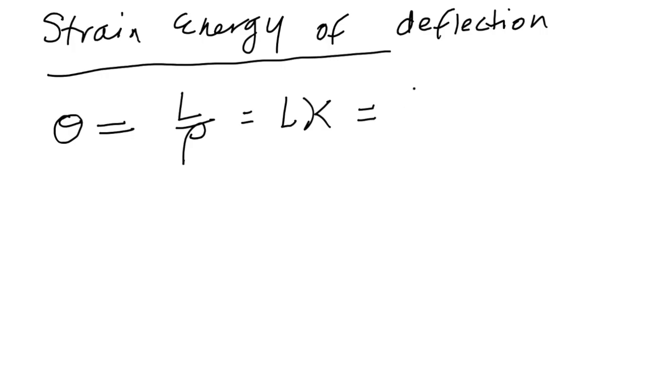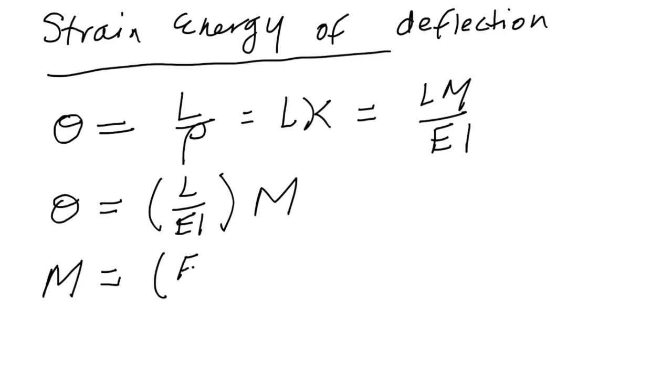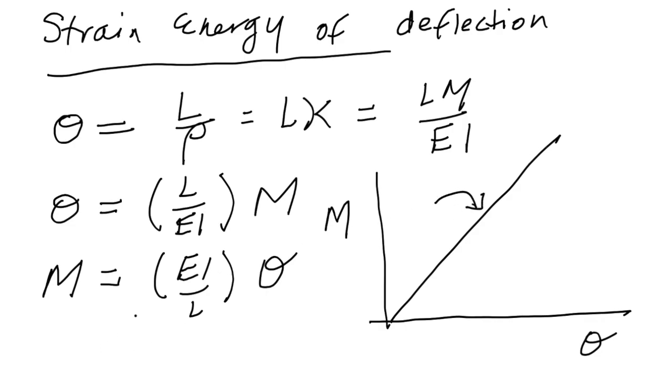So you end up with LM over EI. Looking at this more carefully, there's a linear relationship between theta and M, where L over EI is just the slope of a line. We can also do the reverse relationship by inverting things, where M equals EI over L times theta. If we draw a little graph here of M versus theta, then we know it's a line, and the slope here is going to be equal to EI over L.